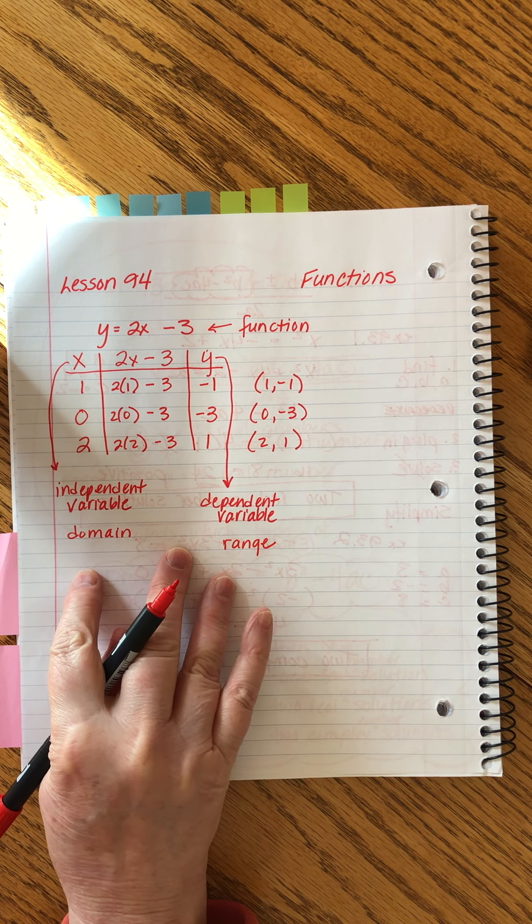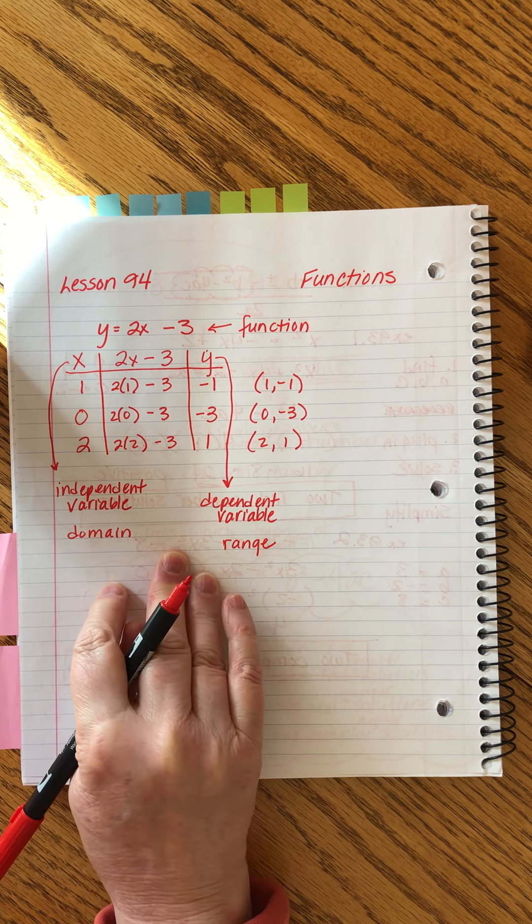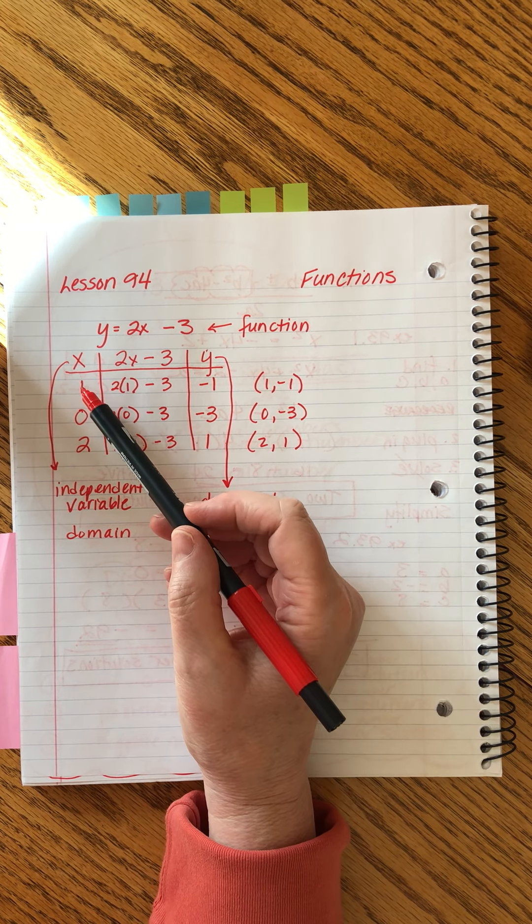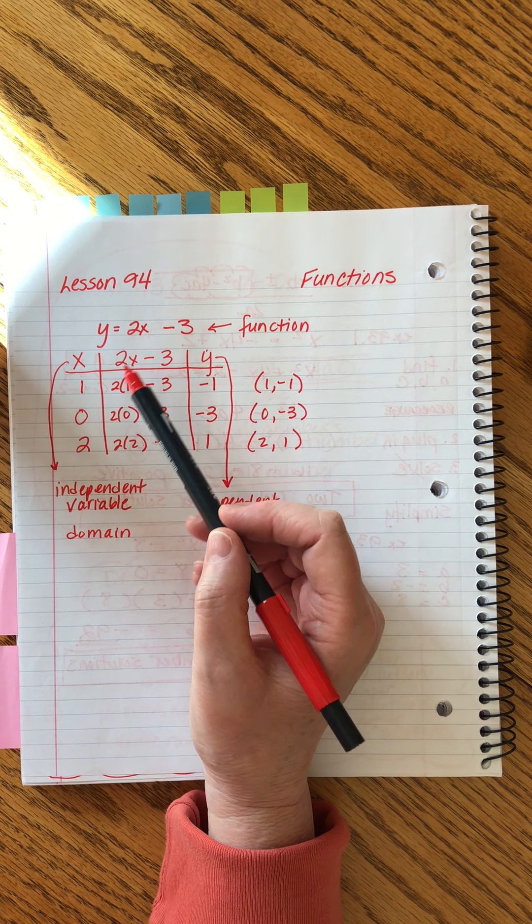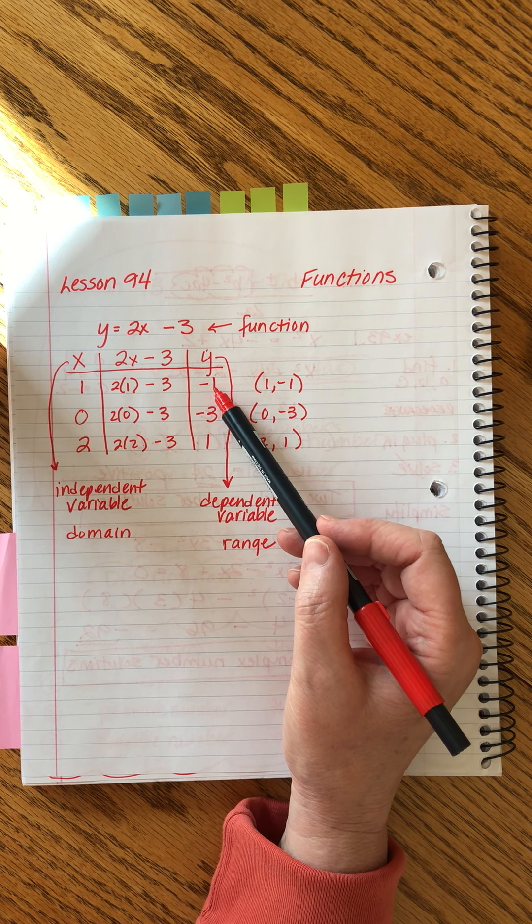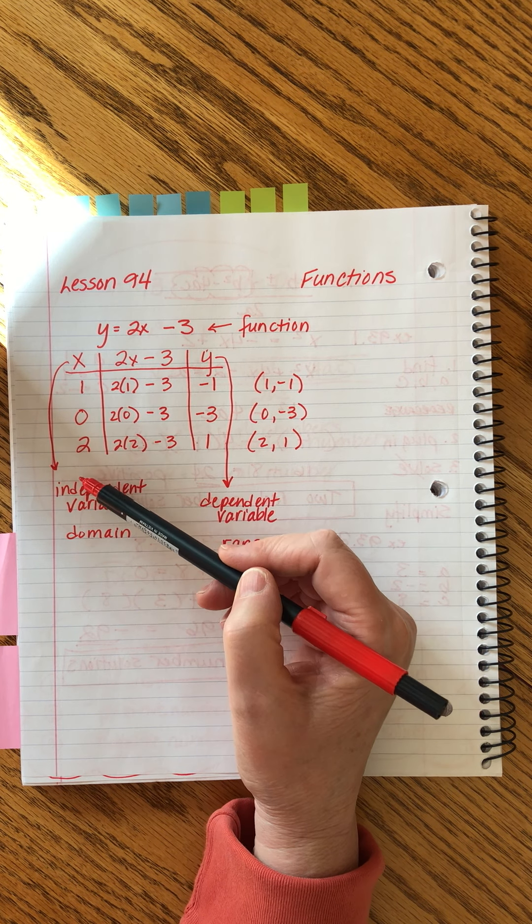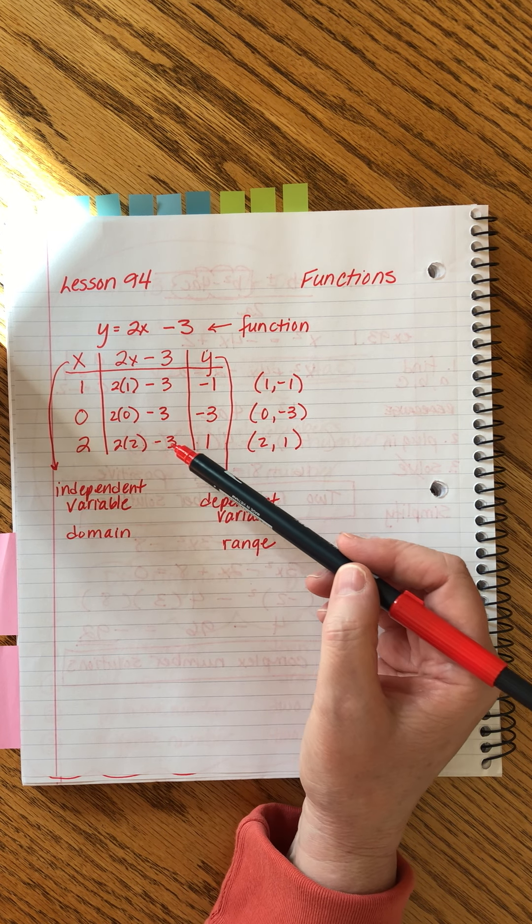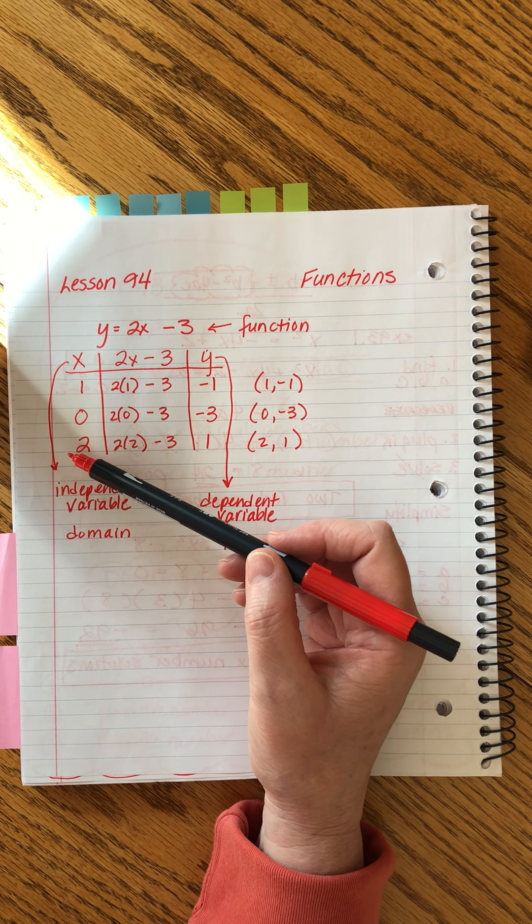This is the vocabulary that I'm talking about. It's nothing difficult, but it's just another way to look at it. Now, you would agree with me that every time we plug one into this function, we are always going to get minus one. It's never going to come out to a different answer. Same for zero, same for two, same for any number we could choose as the independent variable. If we do our calculations correctly, we will always get the same value for y associated with that particular x.